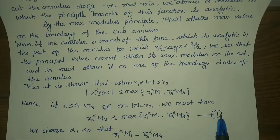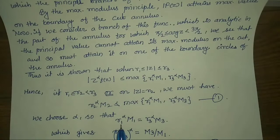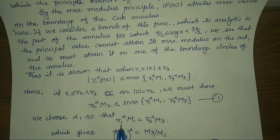Suppose this is equation number 1. Now we choose alpha so that R1 to the power alpha times M1 equals R3 to the power alpha times M3. This means R1 divided by R3, all to the power alpha, equals M3 divided by M1.